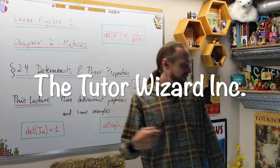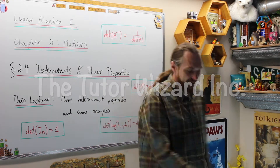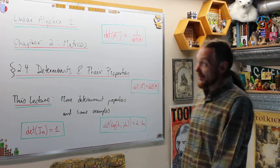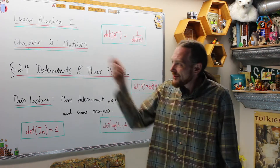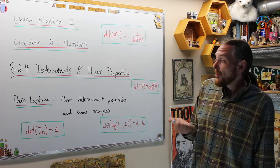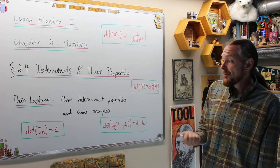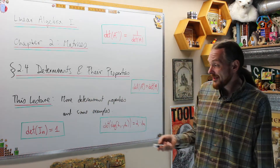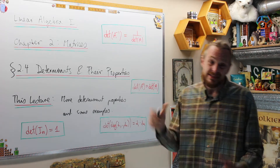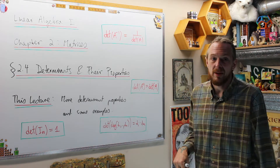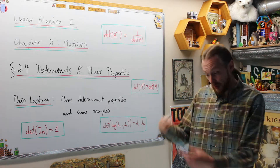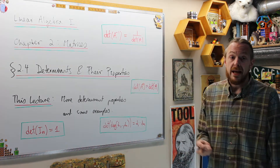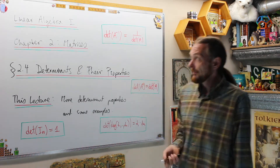Welcome back. This is the Tutor Wizard. I'm Adrian. Please subscribe right here and hit the notification bell to get notifications for other things on our channel. Linear Algebra 1, Chapter 2 is matrices. Section 2.4 is determinants and their properties. What we're going to do this lecture is even more determinant properties and some examples of how we use those determinant properties to compute efficiently the number associated to the n by n matrix.